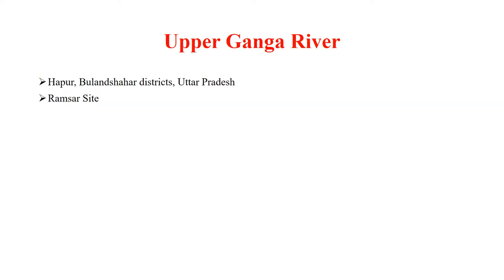Upper Ganga River — the section of the Ganga River in Hapur and Bulandshahr districts — is declared as a Ramsar site.